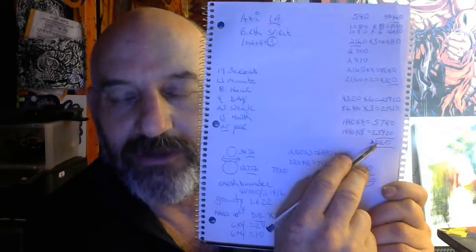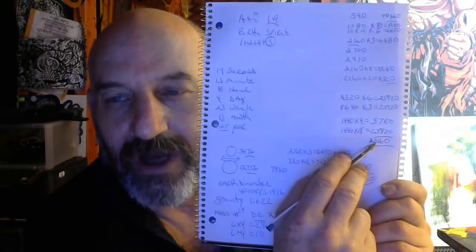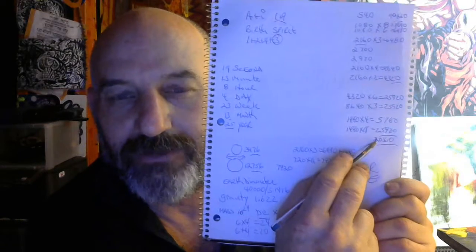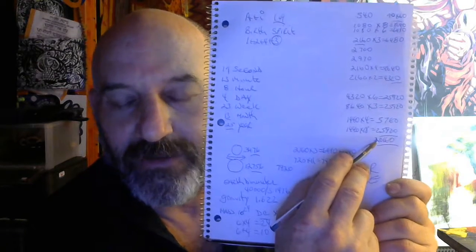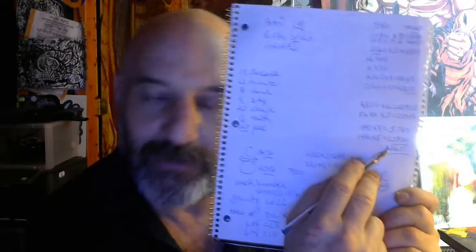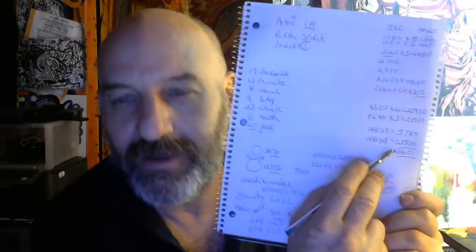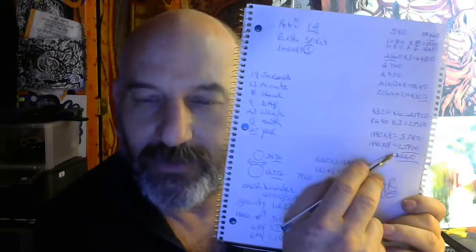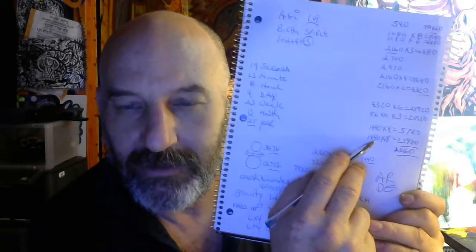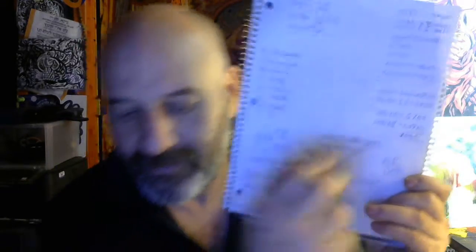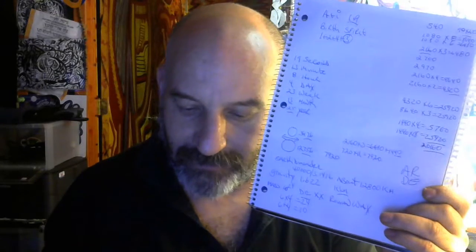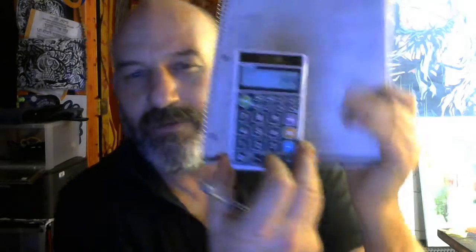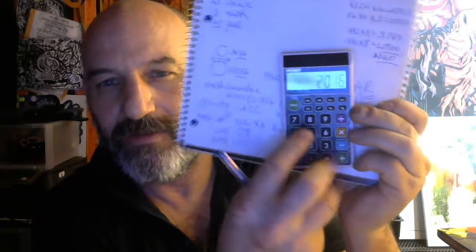3 times 4 plus 3 times 4 times 3 times 4 times 3 times 4 equals 2016. 3 times 4 is 12. 3 times 4 is 12 again. 12 times 12 is 144. 3 plus 4, 3 plus 4 is 7 and 7 is 14. Times 144. 14 times 144 equals to the amount of 2016.